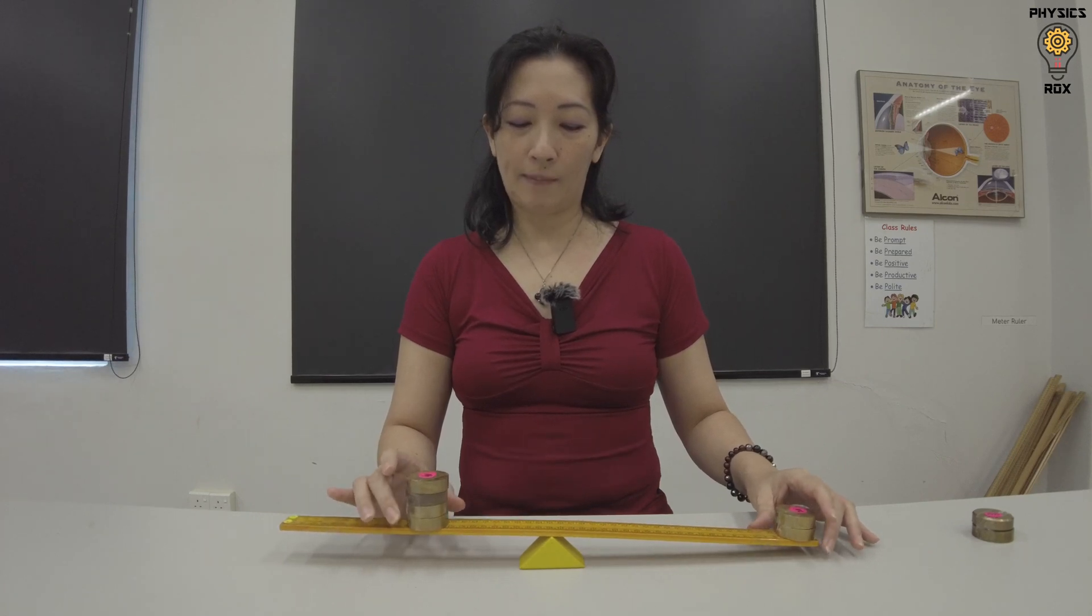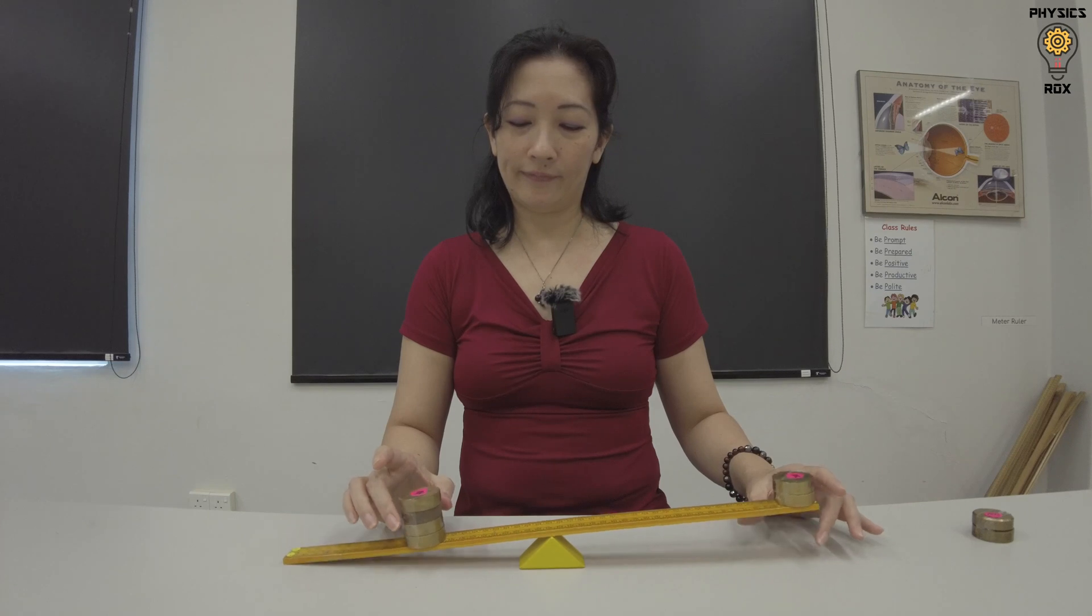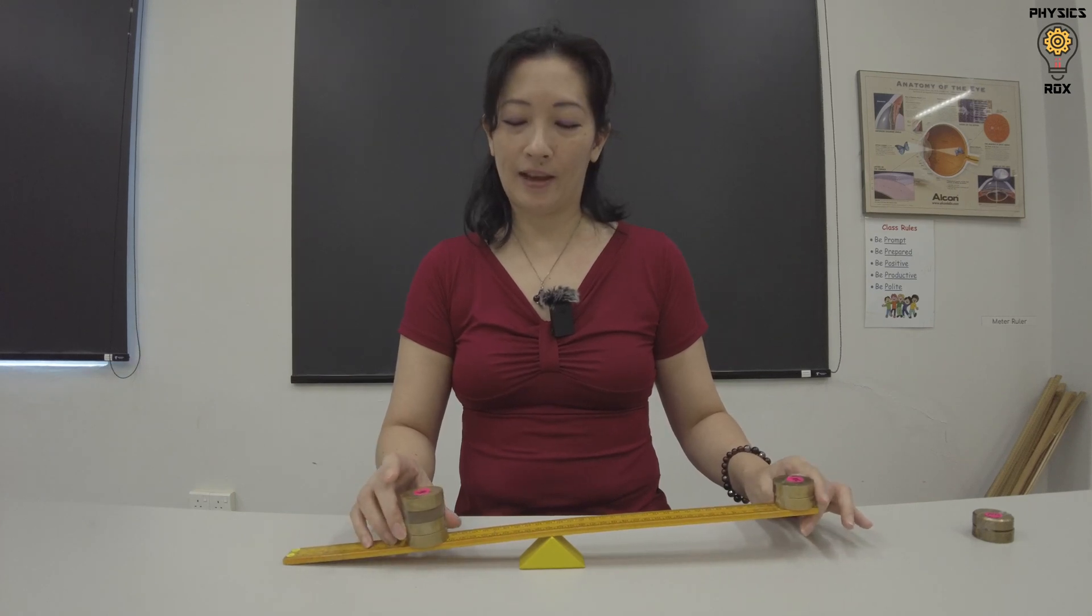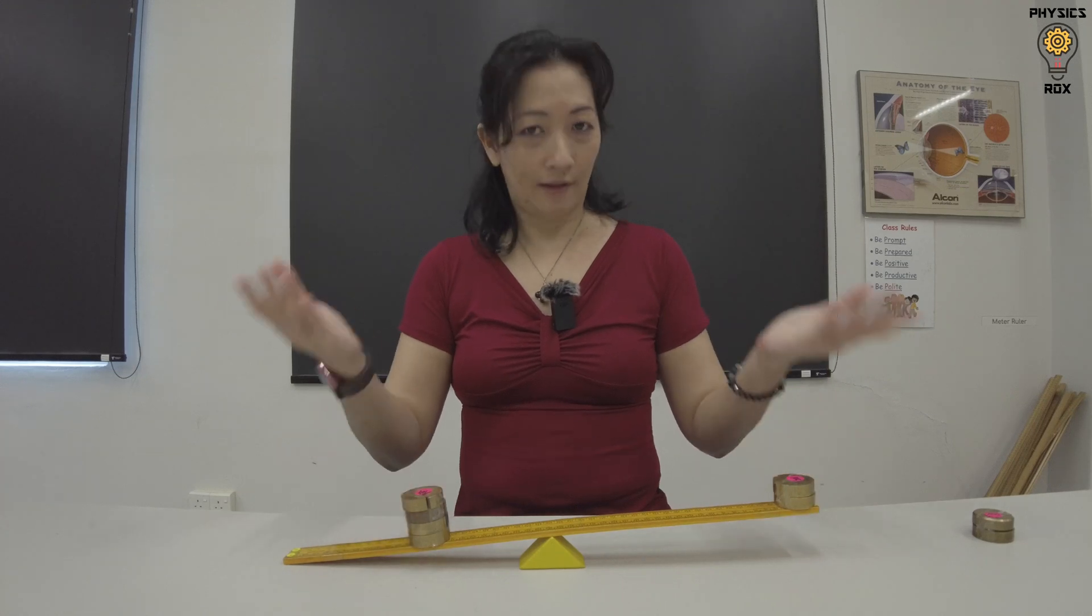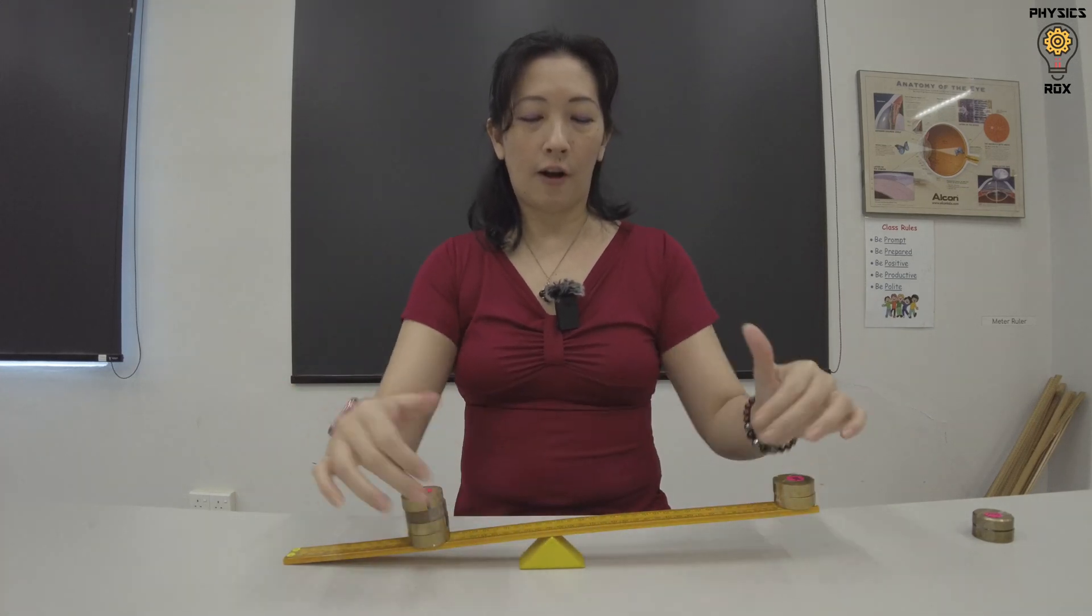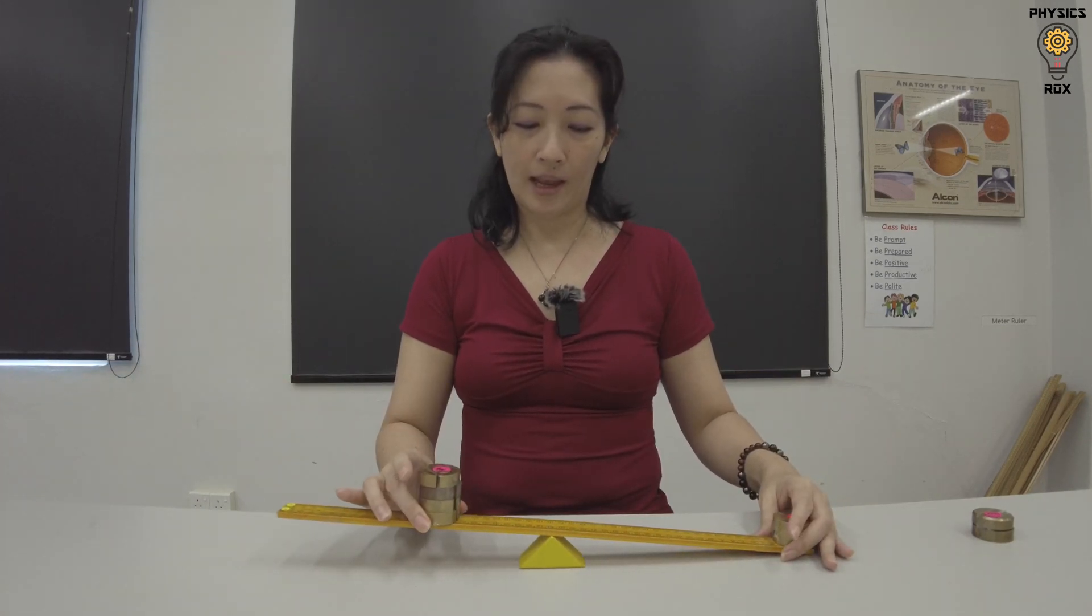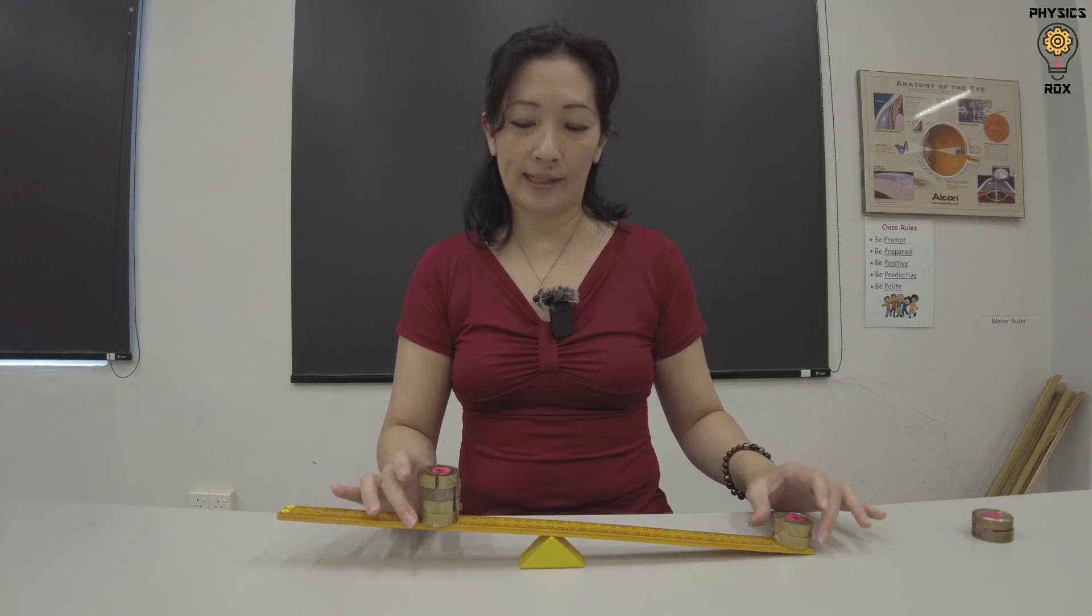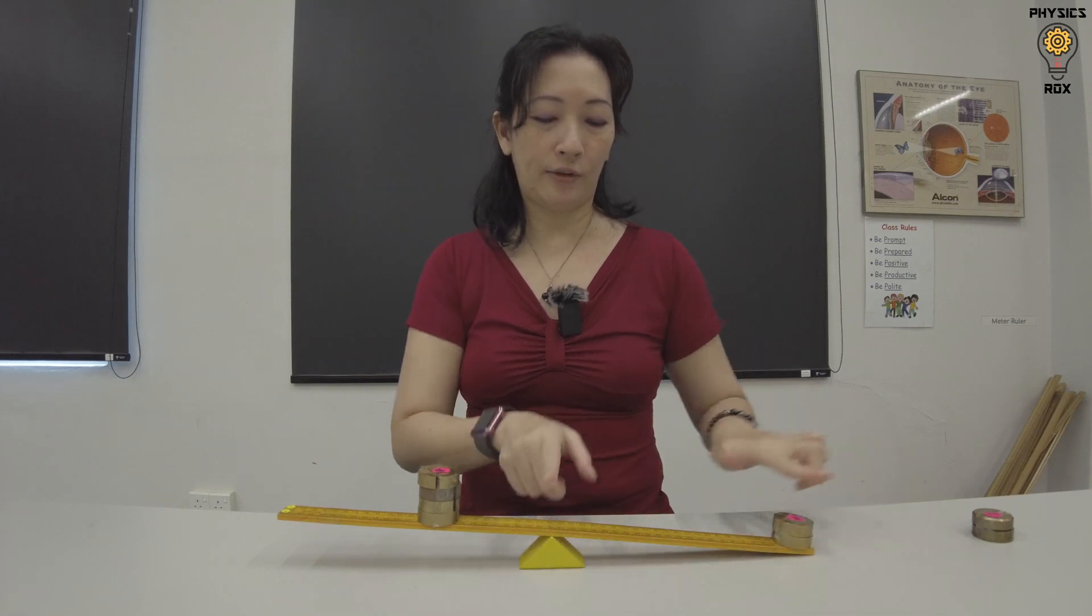So, if we could adjust it somehow so that it could be just about balanced, it's actually possible. So, what this tells us is that a moment depends on the force and the distance of the force from the pivot. So, what this shows us is that if you have a heavier weight and you want to try to balance it with a lighter weight, the heavier weight needs to be nearer the pivot compared to the lighter weight.